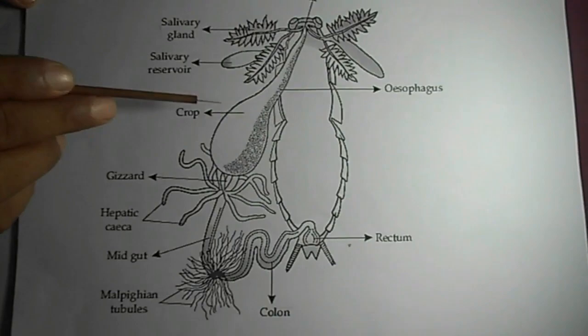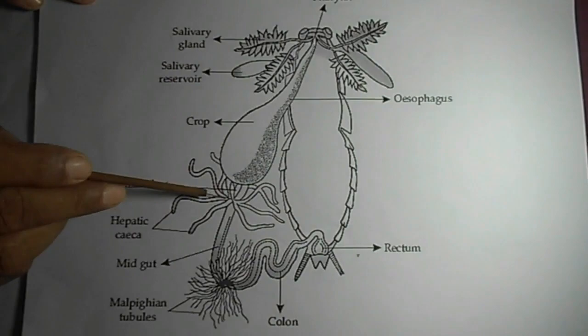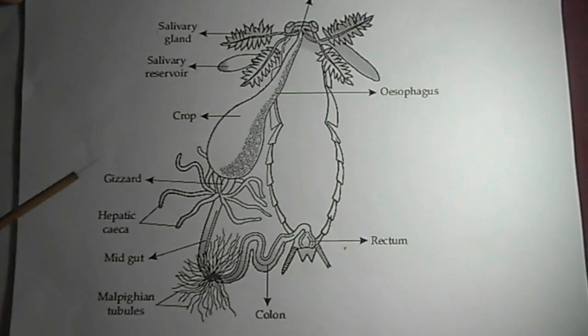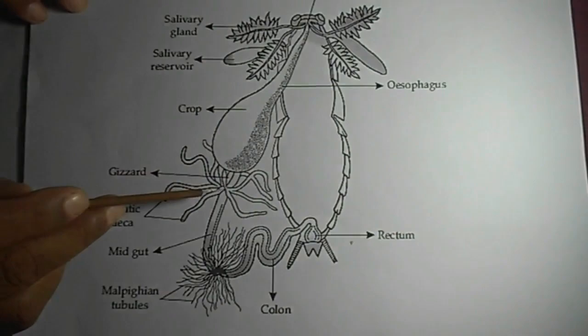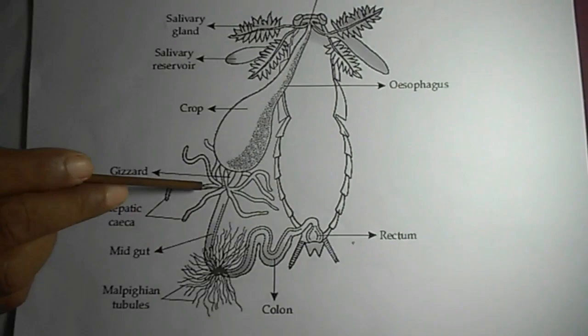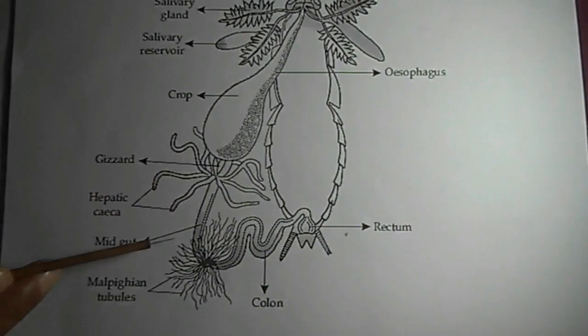After passing through the thoracic region, the esophagus dilates, and this dilated part is called the crop. This is a very muscular dilated part. After the crop, there is a round muscular structure called the gizzard. It is highly muscular and internally has chitinous teeth through which food particles are crushed and sieved. Here we see eight hepatic caeca hanging in the haemocoel.